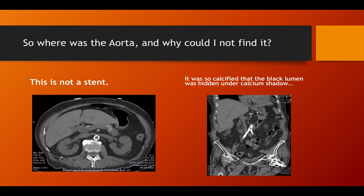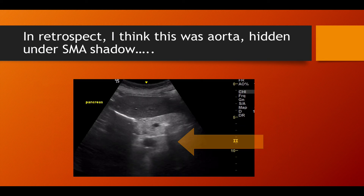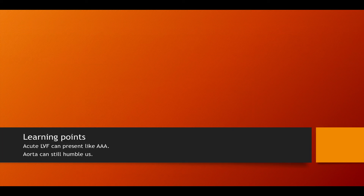Still I went back trying to find the abdominal aorta, and it wasn't until I looked at the CT scan — which we had to get because the patient did seem to have abdominal pain — that it showed the aorta was so calcified it was probably sono-opaque, like a rigid tube. Going back to my pictures, I think the aorta was possibly hidden in a shadow. The learning point from this case: acute LVF can look for all the world like a AAA, and the aorta can still humble us.